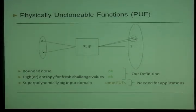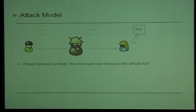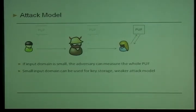Why do we need a super-polynomial input domain? We consider active attackers: Bob wants to send a PUF to Alice and use it to communicate securely, but on the way the attacker gets to measure the PUF. If the input domain is small, the adversary can measure the whole PUF, leaving little that is secret between Bob and Alice. That is why we need a large input domain. For weaker attack models, PUFs with small input domains can still be used.